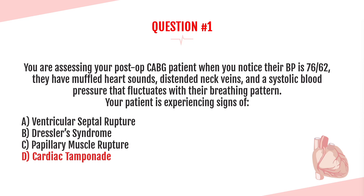None of the other options have clinical signs and symptoms associated with cardiac tamponade. Choice A, ventricular septal rupture, is when you have a rupture of the septum separating the right from the left side of the heart, creating a hole that leads to oxygen-rich blood shunting from the left to the right side. Signs include a systolic murmur at the left sternal border, shortness of breath, an S3 heart sound, and crackles — none of which are seen here.